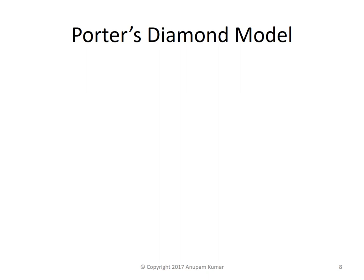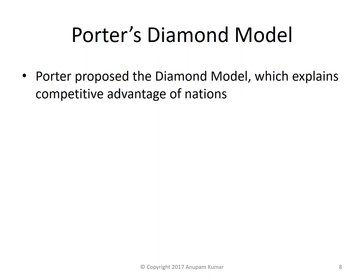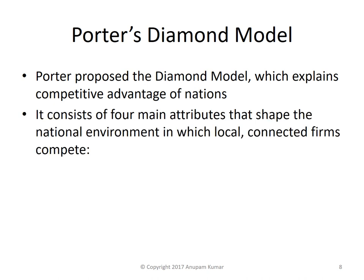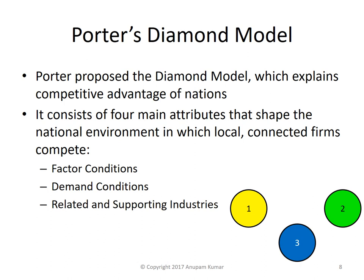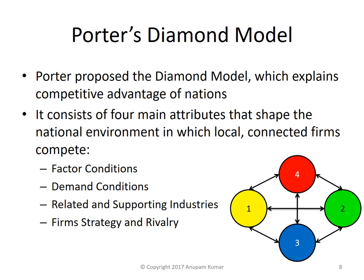As a result of the study, Michael Porter proposed the Diamond Model, which explains the competitive advantage of nations. It consists of four main attributes that shape the national environment in which locally connected firms compete. These attributes are: factor conditions, demand conditions, related and supporting industries, and firm strategy and rivalry. All four attributes are interconnected in a unique mesh to create competitive advantage of a nation. We shall discuss each of these attributes separately.